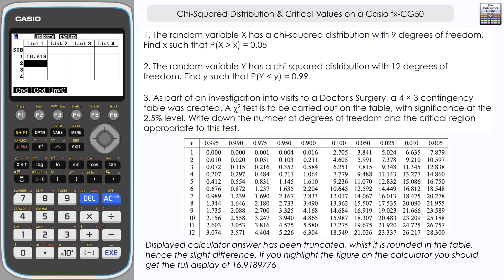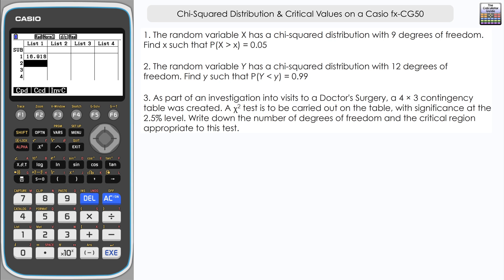Let's have a look at question 2. So it's a slight variation of what we were asked for in question 1. The random variable Y has a chi-squared distribution with 12 degrees of freedom. Find Y such that the probability that Y is less than Y equals 0.99.